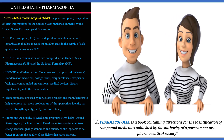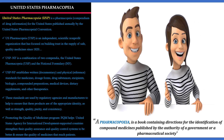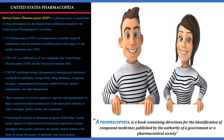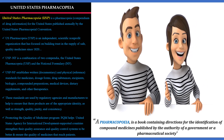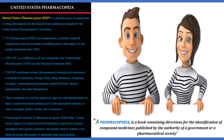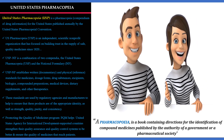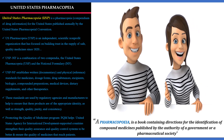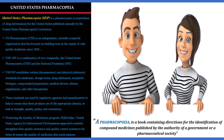A pharmacopoeia is a book containing directions for the identification of compound medicines, published by the authority of a government or a pharmaceutical society. The United States Pharmacopoeia is a compendium of drug information for the United States, published annually by the United States Pharmacopoeia Convention. USP is an independent, non-profit scientific organization that has focused on building trust in the supply of safe, quality medicine since 1820.